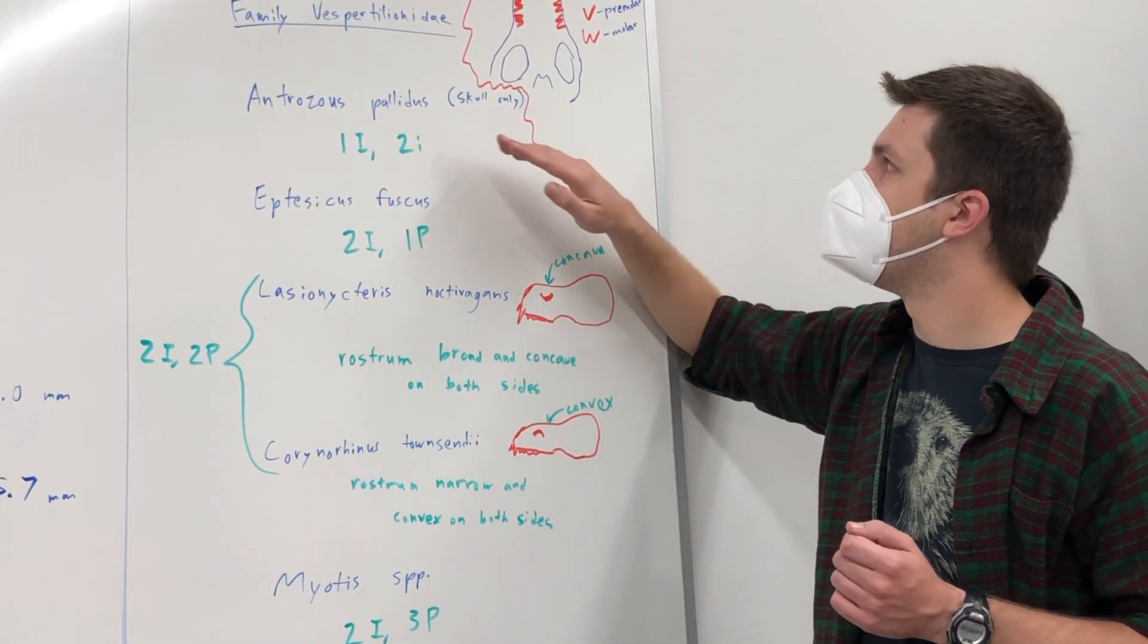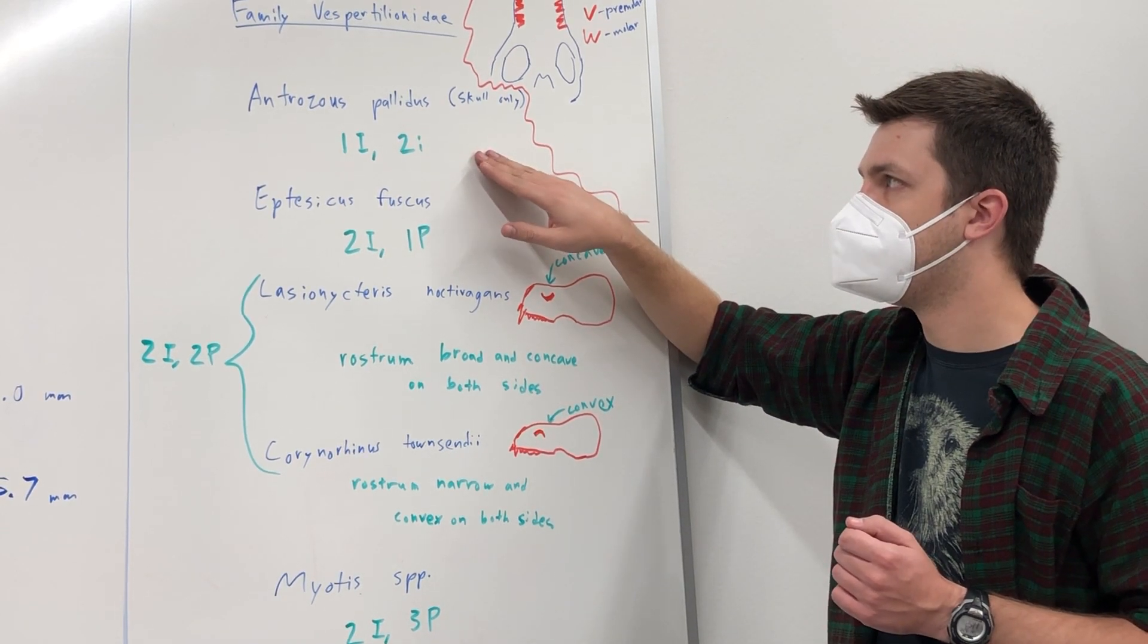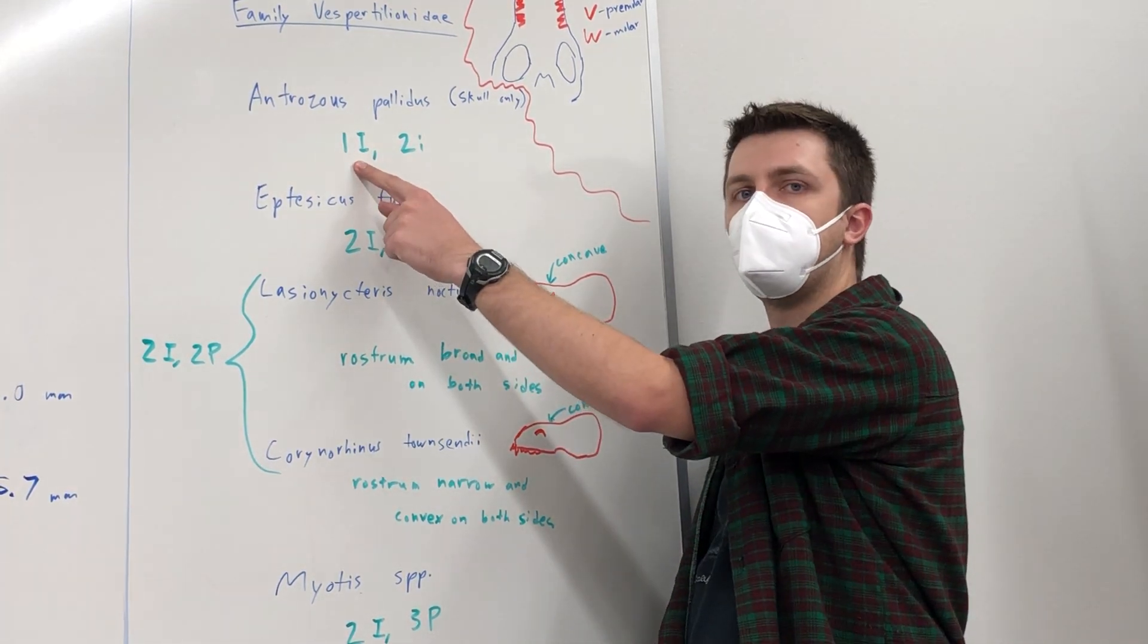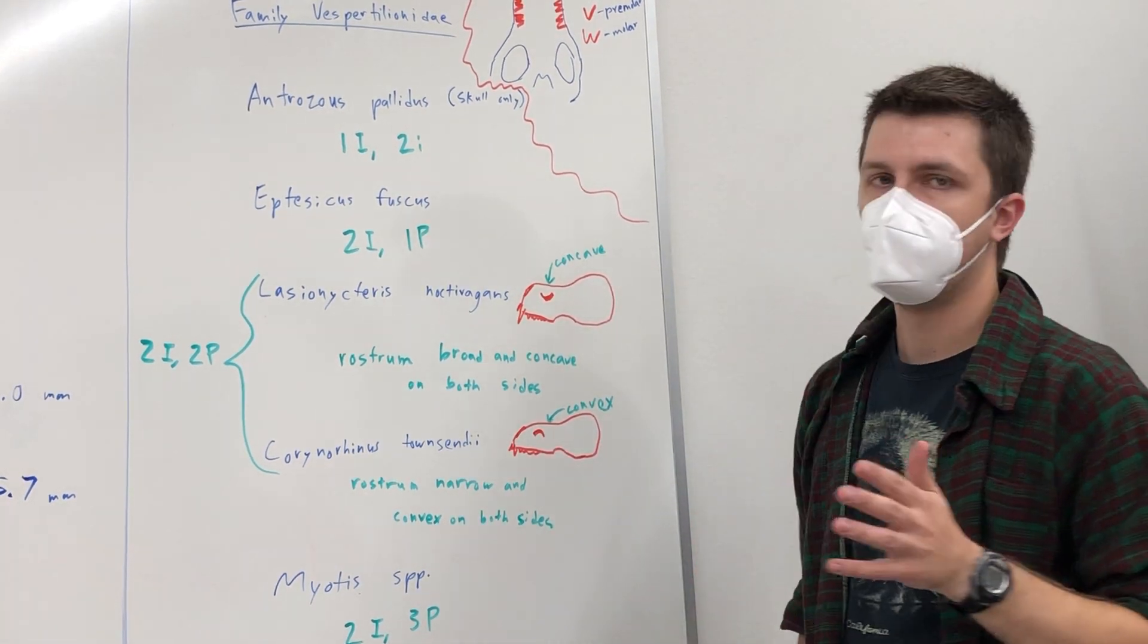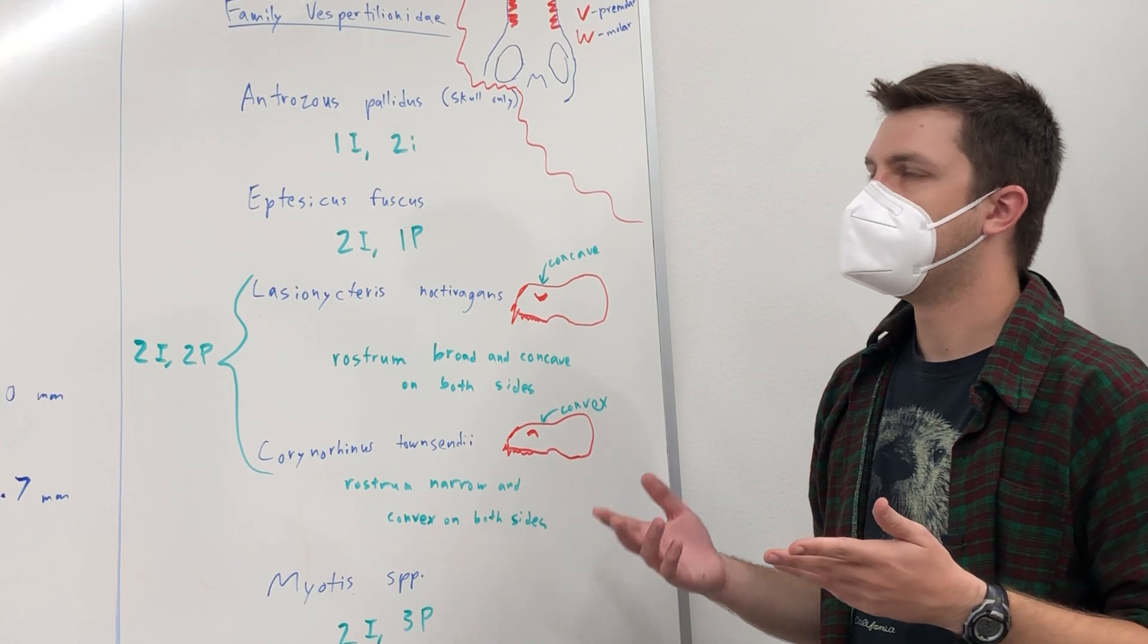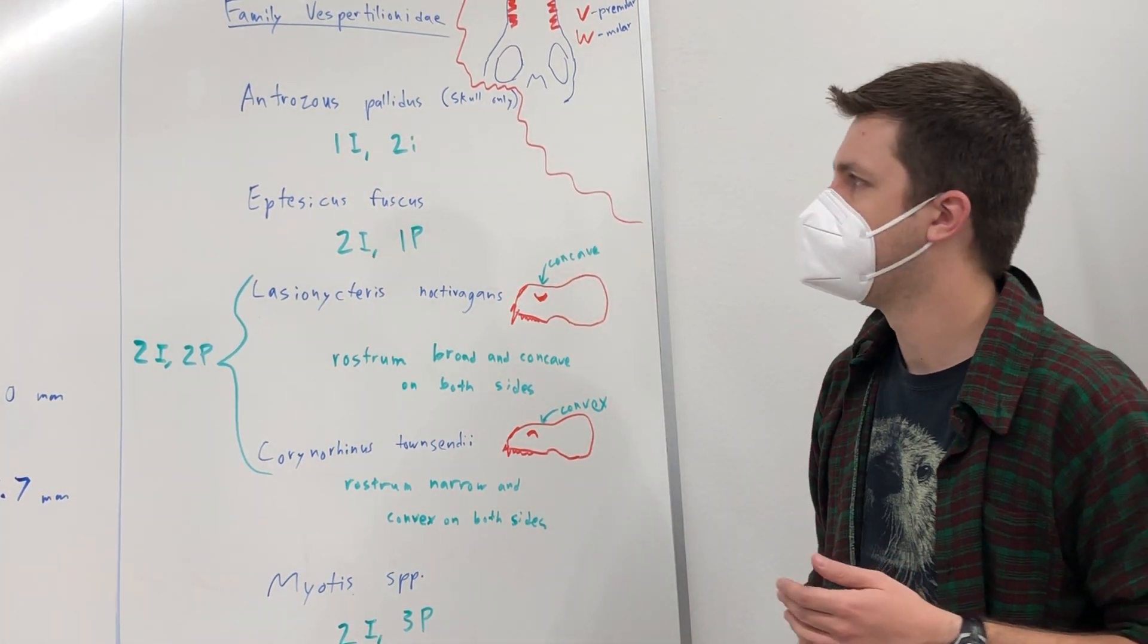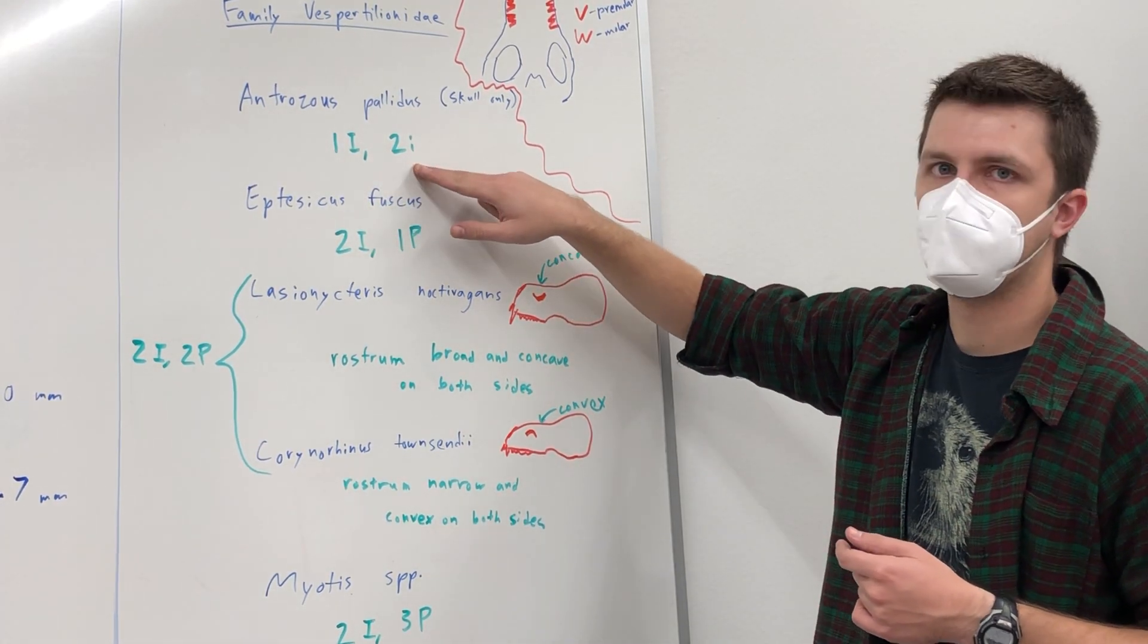Now, if you want, you can figure out the dental formula for the species overall, but I'm just pointing out the particular teeth that are worth noting for identification because the other ones may be the same or you don't need to, for example, count the number of canines because all of these have one upper and one lower canine. Right, so one upper incisor, and then this is kind of secondary.